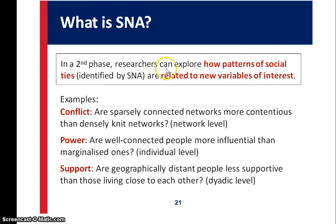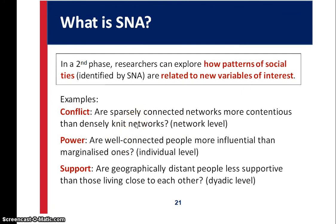How do patterns of social ties relate to variables of interest? In examples of conflict: are sparsely connected networks more contentious than densely knit networks? We've always said communication is the key — now we can actually study how much communication is happening and compare that to networks that have conflict.